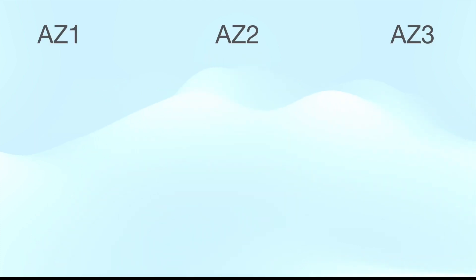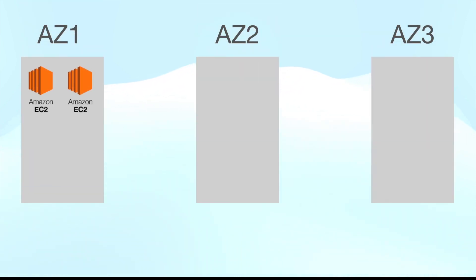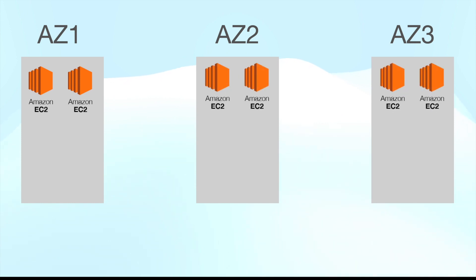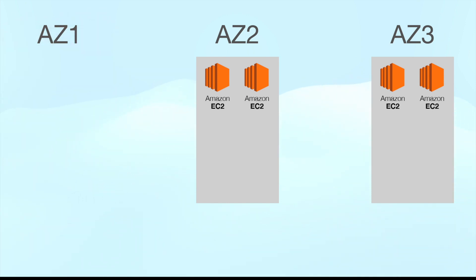Let me take an example. You have three AZs in your region — AZ1, AZ2, and AZ3. You created two EC2 instances in each AZ, and your application for its normal function needs six instances at any given point of time. What happens when AZ1 goes down? You have only four instances, but you need six for normal operation.